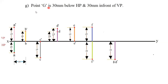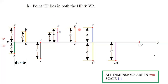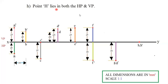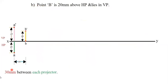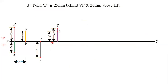Next is point G. Point G is 30 mm below HP, so mark 30 mm downward. And 30 mm in front of VP — both are 30 mm, so you get two coinciding points: both G and G dash fall at the same location. Last point H will be lying on both HP and VP, so it automatically lies on the XY line — H and H dash both fall on XY. The 30 mm spacing between each projector means between A and B leave 30 mm, between B and C leave 30 mm, between C and D leave 30 mm, and so on for all points.